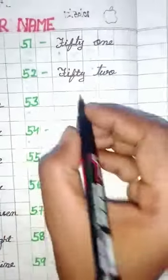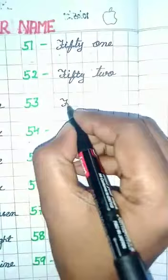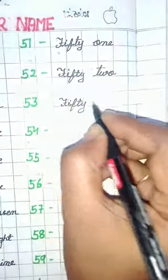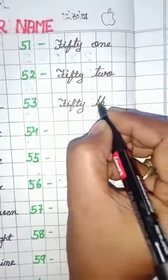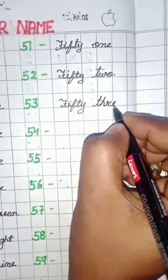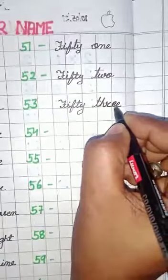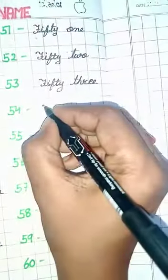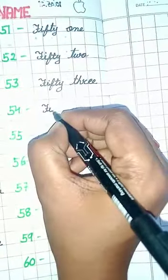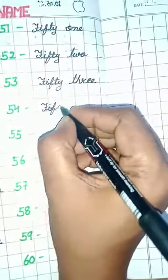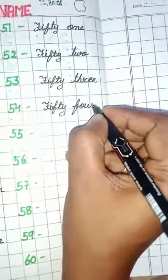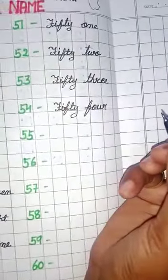53. F-I-F-T-Y, 50, T-H-R-E-E, 53. 54. F-I-F-T-Y, 50, F-O-U-R, 4, 54.